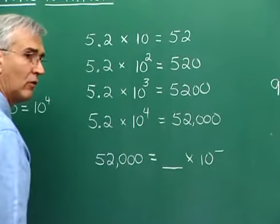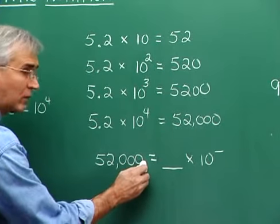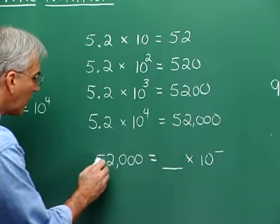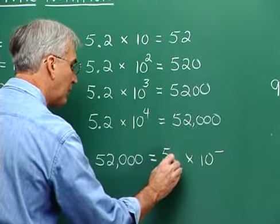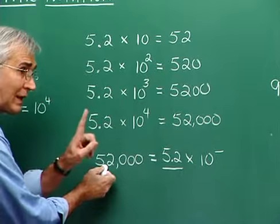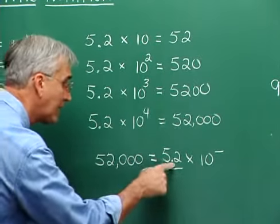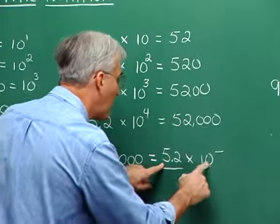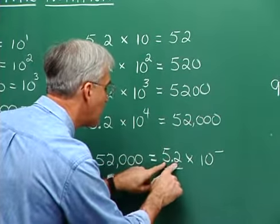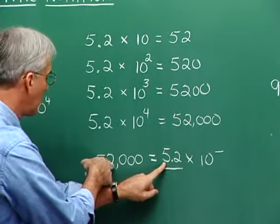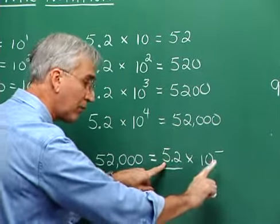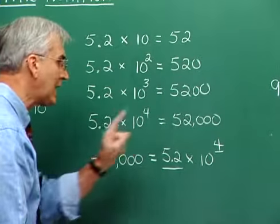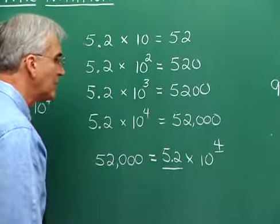Here's how we go about doing that. We take the decimal that is understood to be at the end, and we slide it over one, two, three, four places. We write this number as 5.2 — sliding the decimal to a position where there's only one digit to the left of the decimal. Then times ten to what exponent? In order to accomplish sliding this decimal four places to the right, we need four as the exponent on ten. We write an exponent corresponding with the number of digits over which we slid the decimal.